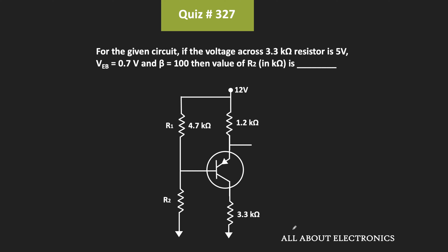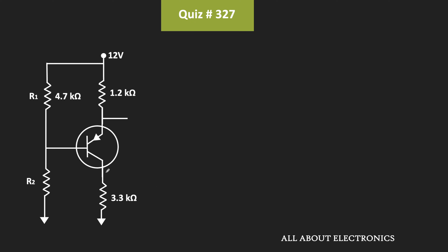Hey friends, welcome to the YouTube channel all about electronics. In this question we have been given a transistor circuit, and for the given circuit we have been asked to find the value of resistor R2. We have been given that the voltage across the 3.3kΩ resistor is equal to 5V.